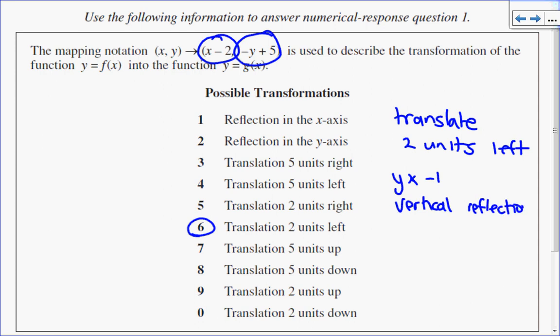When we reflect things vertically, we reflect them in the x-axis. So vertical reflection in the x-axis is option number 1.